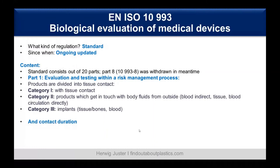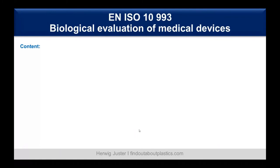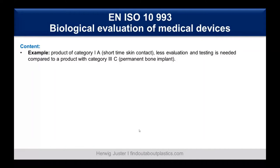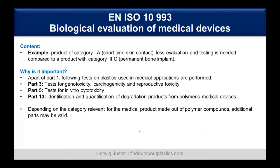Contact duration is also important: A is short-term, below 24 hours; B is longer, below 30 days; and C is permanent, above 30 days. For example, a product in category 1A — short-term skin contact — requires less evaluation and testing compared to a product in category 3C, which is a permanent bone implant.